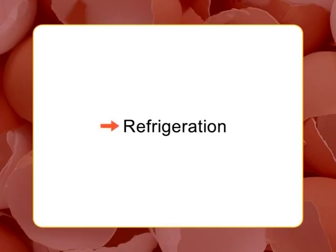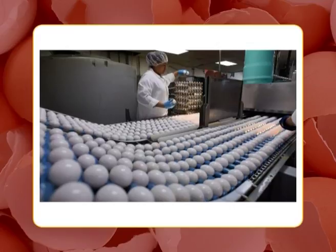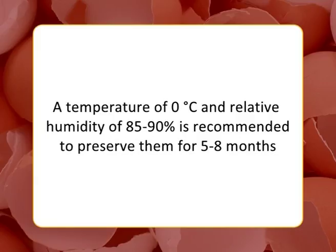Refrigeration: The best method of preserving whole shell-on eggs is refrigeration at 0 to 3°C in a well-sealed container. A temperature of 0°C under a relative humidity of 80 to 90 percent is recommended to preserve eggs for 5 to 8 months.